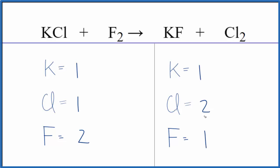Why don't we start by putting a 2 in front of the KCl? Now we have 1 times 2, so we have two potassium atoms, and 1 times 2, that'll give us two chlorine atoms, so we balance the chlorine atoms.